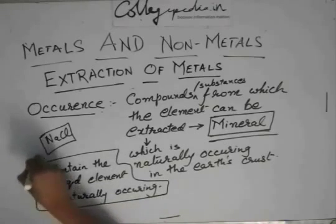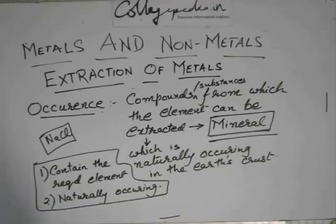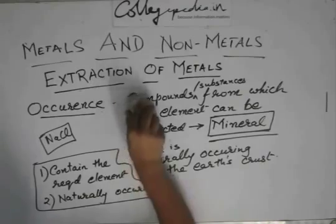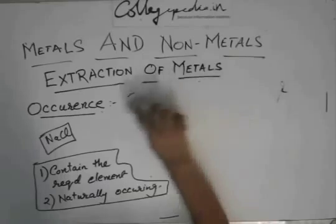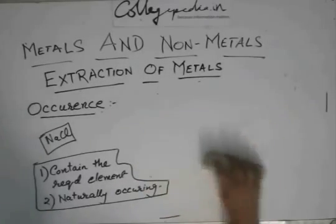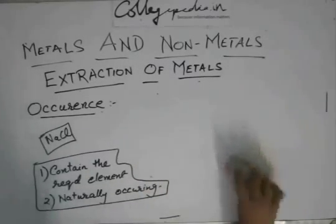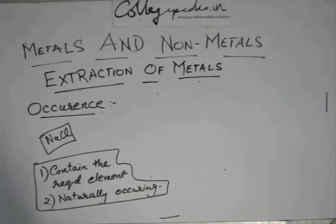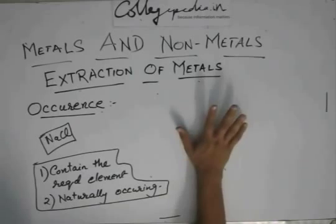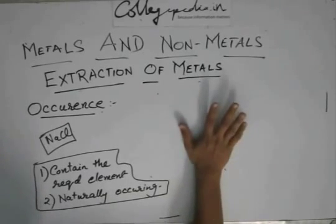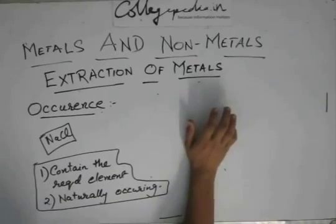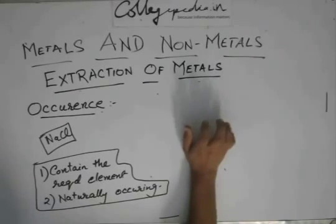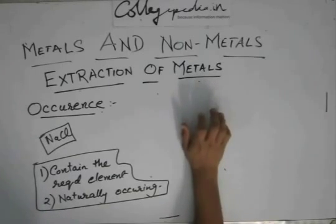Just remember these two points and you get the definition of a mineral. You can make up your own definition: a substance which contains the required element for extraction and which is naturally occurring in the earth's crust is called a mineral.